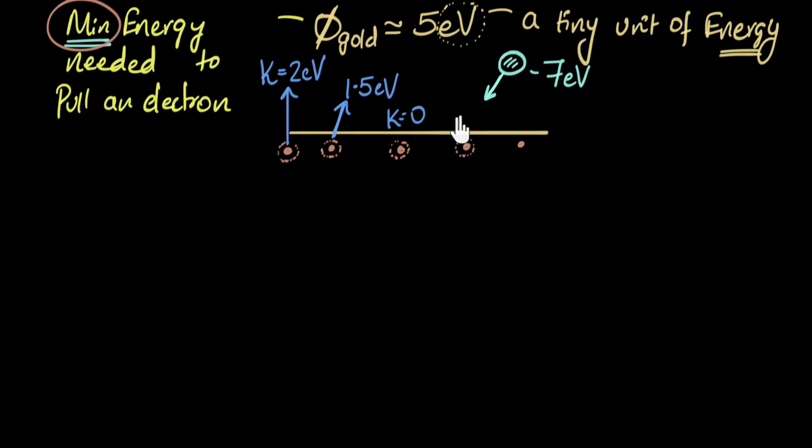So maybe this one requires six to pull out. And when it absorbs, it uses six, and only one is remaining. And maybe it got lucky, it did not collide. So then it'll come out with kinetic energy of one electron volt.